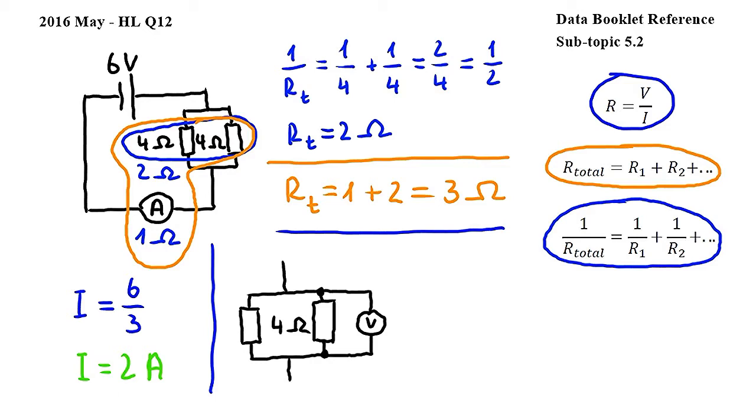To do this I have redrawn part of the circuit here that we will be focusing on. So we have calculated that the current that enters the junction before the two resistors is 2 amperes.